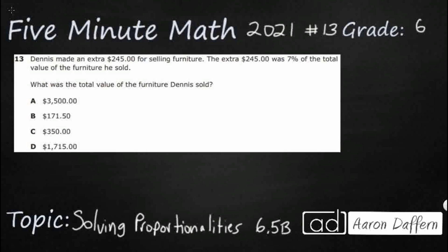So Dennis is going to make $245 for selling furniture, and this $245 extra was 7% of the total value of the furniture he sold. So we need to find the total value of the furniture that he sold. So we're looking at this proportionality. We can solve proportionalities if we can make equivalent fractions, as long as we know three of the four terms.